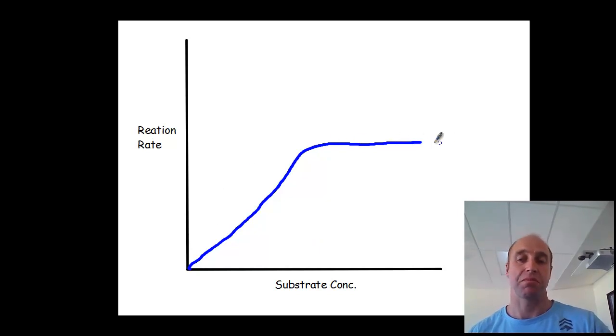And this plateau is based on the number of enzymes. If you had more enzymes present, that plateau and reaction rate would be a little higher. You'd have more points for the reaction to occur. Good luck with your reaction rate graphs for enzymes.